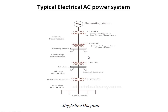At the distribution side, the voltage is reduced from 11 kV to 415 V. For three-phase consumers it will be 415 V, and for single-phase consumers it will be 230 V. In this video I have explained the general electrical power system and described a single line diagram showing the voltage levels at each stage from generation through to the consumer.